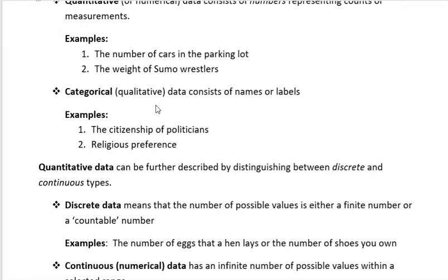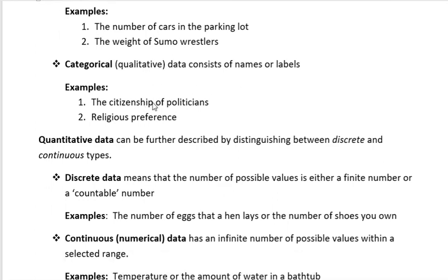Categorical or qualitative data consists of names or labels. Examples include the citizenship of politicians or religious preference.